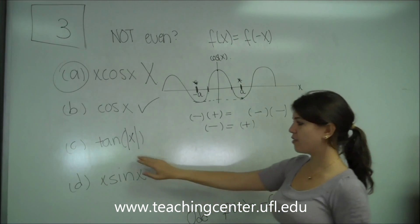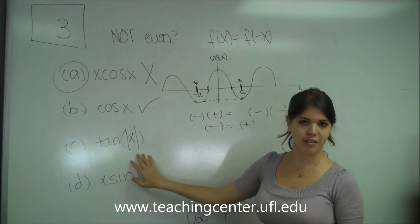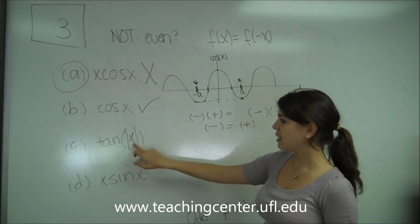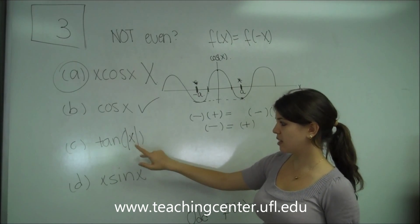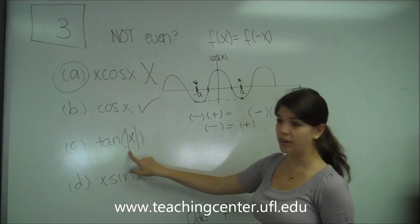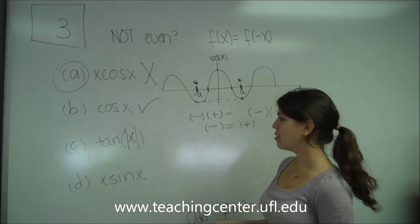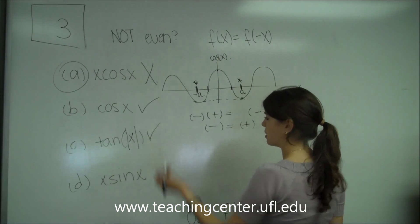So the tangent of an absolute value is definitely going to be even, because if you plug in a positive x, it's going to turn positive. If you plug in a negative x, it's going to turn positive as well. So that has to be even.